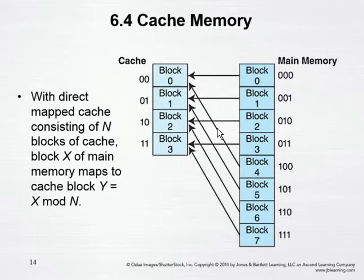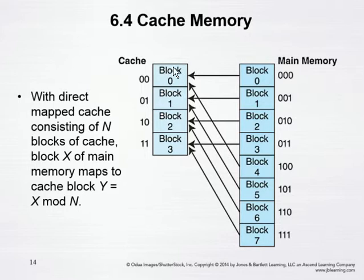So you have a lot of this swapping going in and out of the cache — values coming from memory going into the cache, and then when they're not needed, or when something else is a higher priority in terms of need, that replaces whatever was in the cache block.